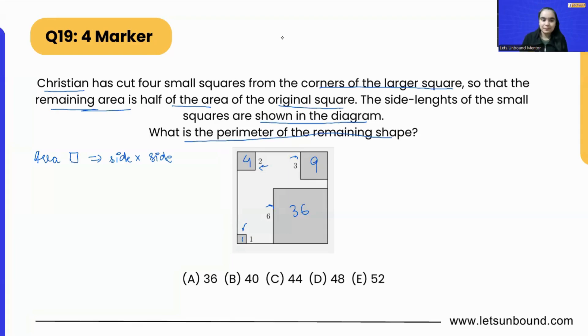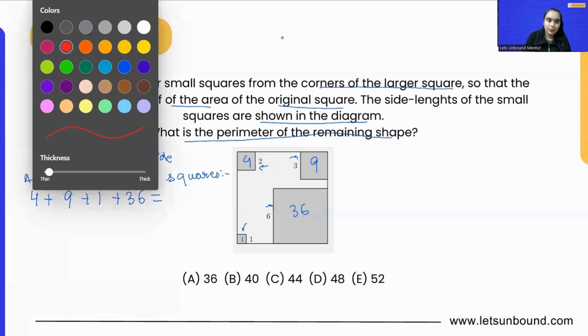Now we know that the area of all these squares is half the area of the original square. So what we can do over here is let's add up all the areas. We got four plus nine plus one plus 36. This is the area of all shaded, I am putting the word shaded over here because in the picture it looks shaded and it becomes easier as well to understand.